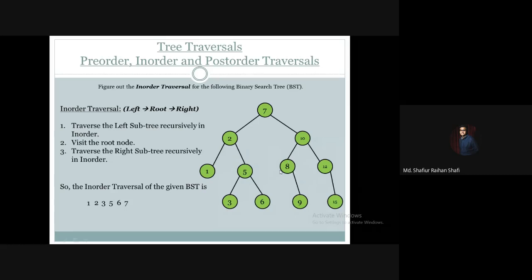We visit node 8 and print it. Then we visit 8's right subtree, which is node 9, and print it. So after traversing the left subtree of 10 — visiting 8 and 9 — we then visit the root of this particular subtree, which is 10, and print 10.